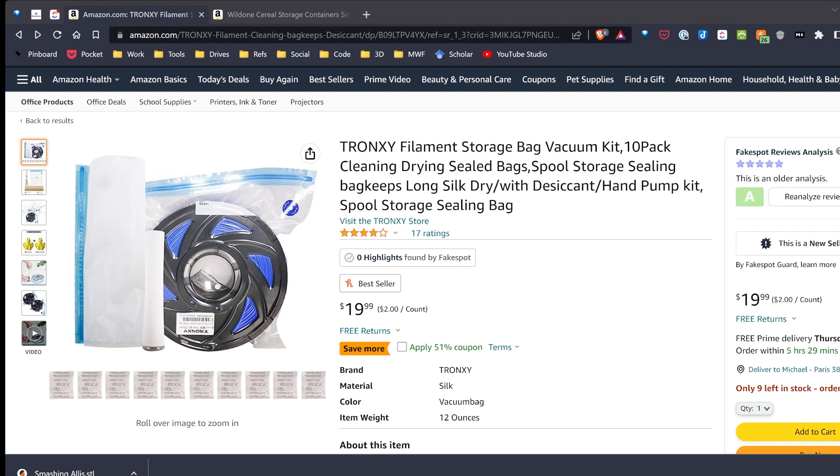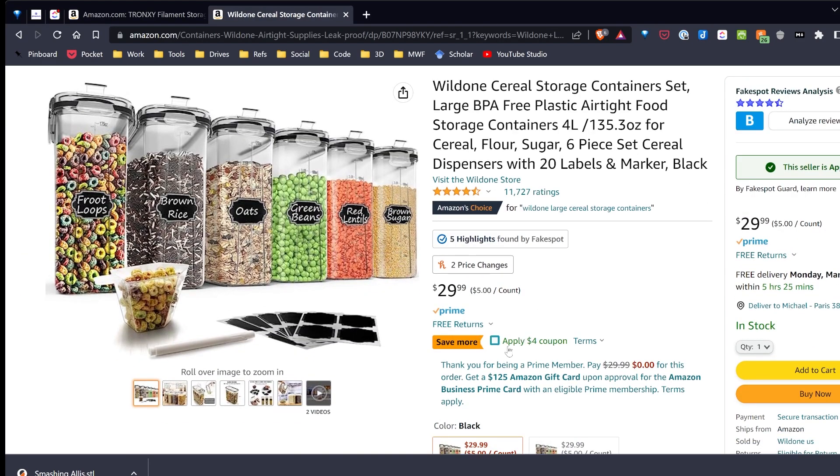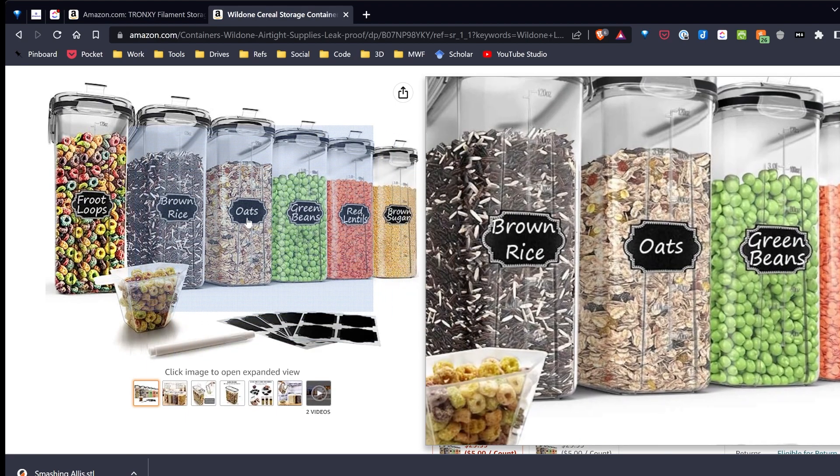The dry bags I'm using are from Tronxy and they're a set of ten. Currently they're on sale for just about ten dollars, which equals about a dollar a bag. That's pretty cheap. Comparing that to the dry boxes, you'll see the dry boxes are about twenty-five dollars for five, so they're about five dollars a piece.